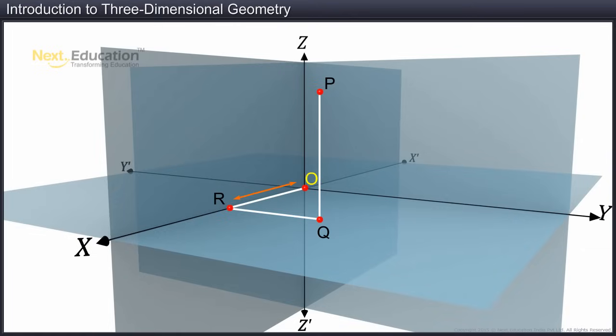Distance OR is the x-coordinate. RQ is the y-coordinate. And PQ is the z-coordinate.